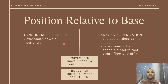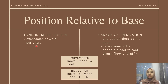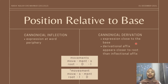The second property is position relative to base. Canonical inflectional affixes are expressed at the word periphery — meaning by the end of the word. However, canonical derivational affixes are expressed closer to the base, or closer to the root. Therefore, the derivational affix appears closer to the root as an inner layer, while the inflectional affix appears as an outer layer, far from the root.